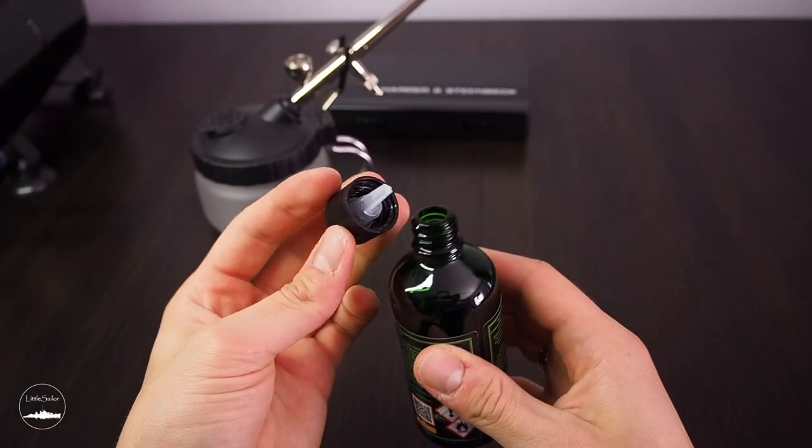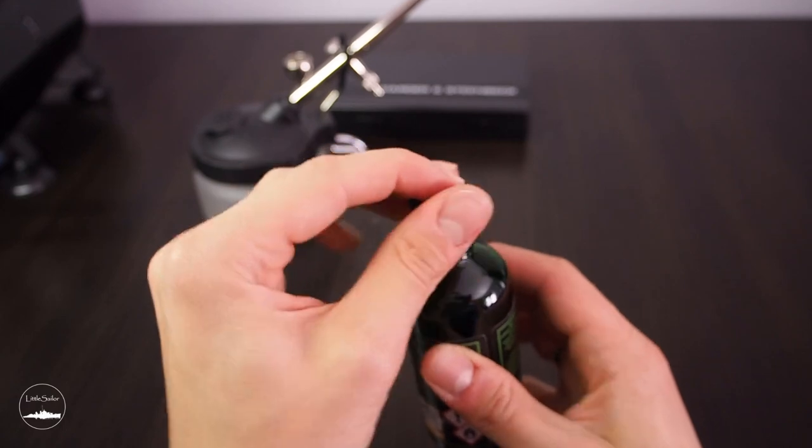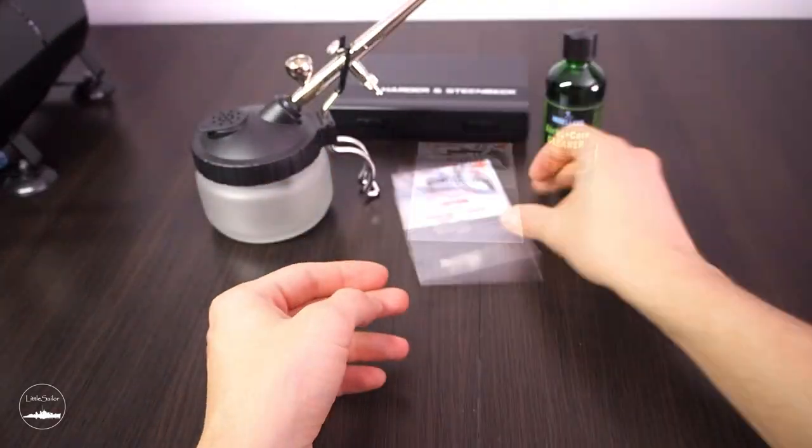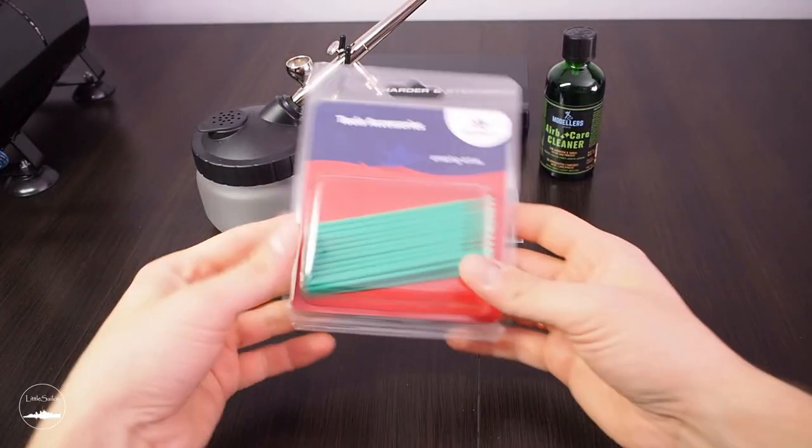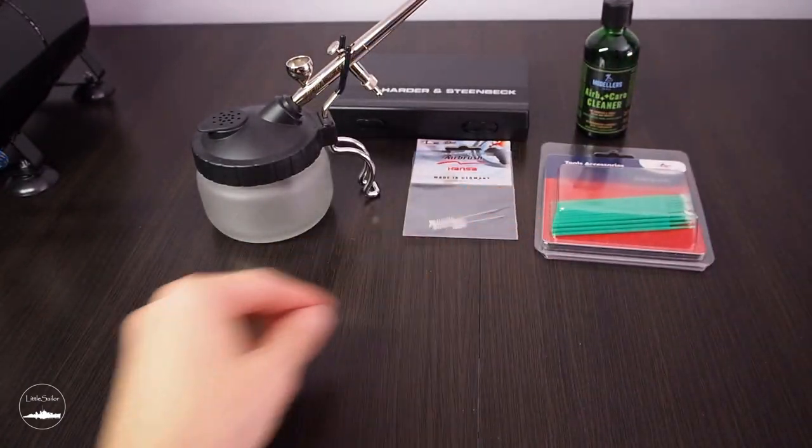At the beginning I'm going to use mainly Gunze paint that is Mr. Color now so I hope that Mr. Leveling thinner will be perfect for them. Some cleaning materials such as cleaning rods and sticks, dust free compresses and nitrile gloves.